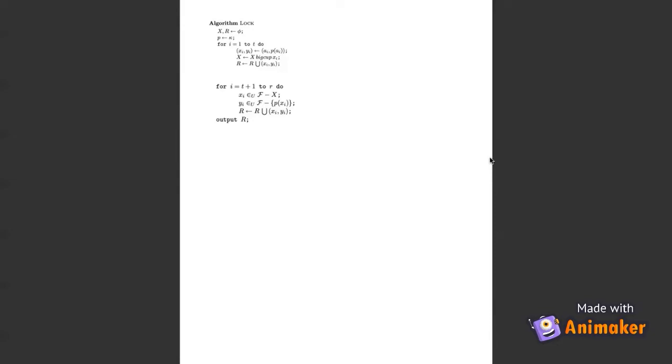And in this algorithm, we use the variables X and R and set them to empty. We then set the secret data to a corresponding polynomial P.